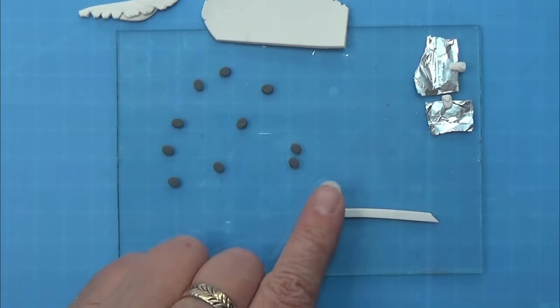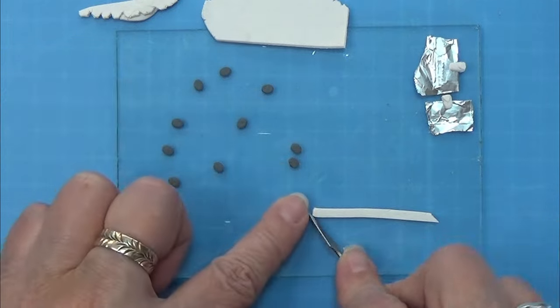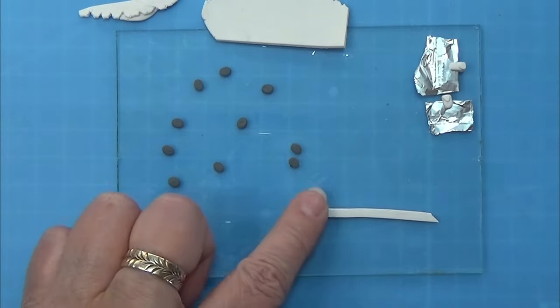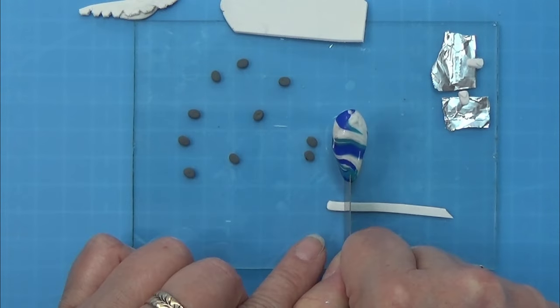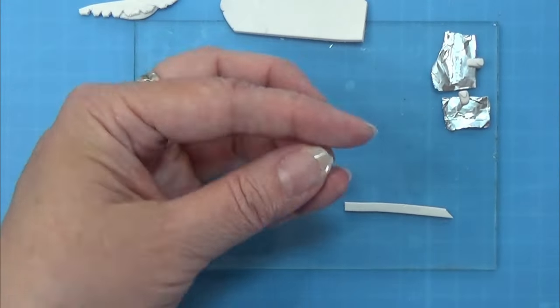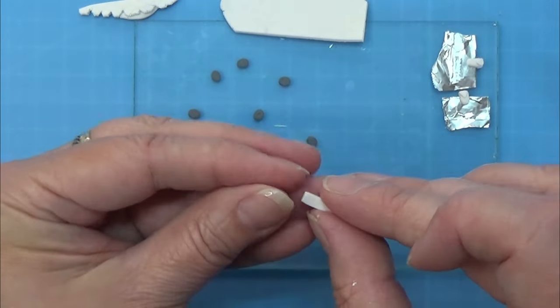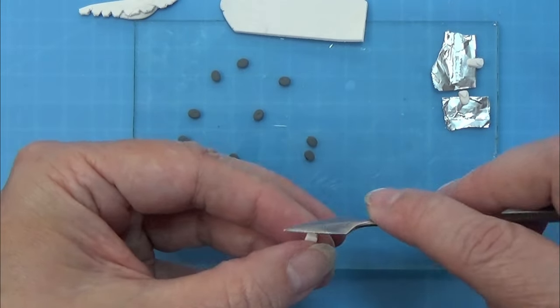Then I am going to pinch the front here so that it is kind of rounded off in the corners at the front. And then I am going to cut this off so that it is around 6-7 millimeters long, making sure that the front of it is pointy.